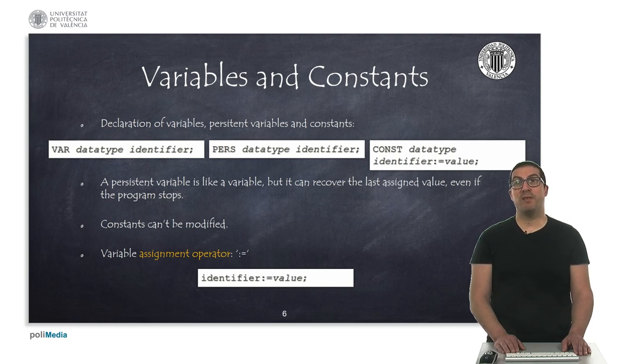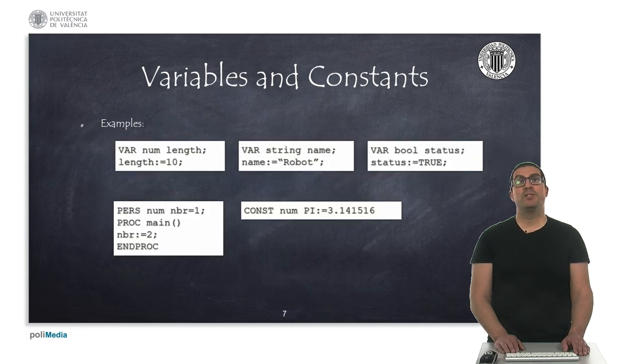Variables can take different values. To assign a new value to a variable, we can use the assignment operation with a colon and equal sign operator. Here I show some simple examples declaring some variables and assigning values to them, or declaring a constant, in this case the constant pi.